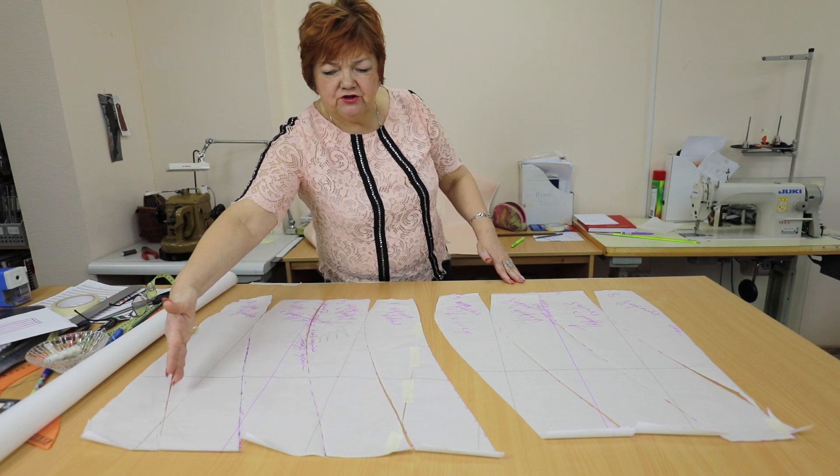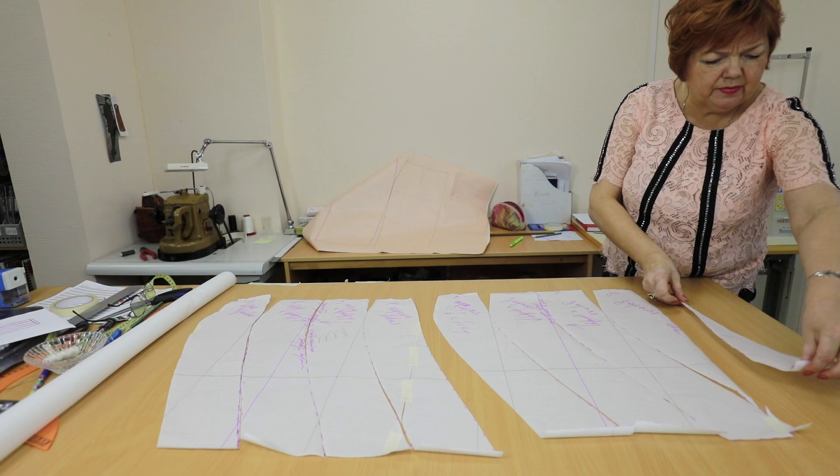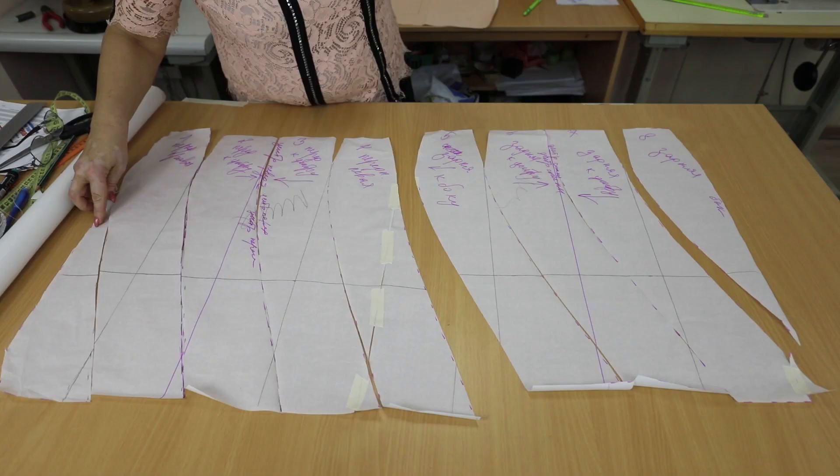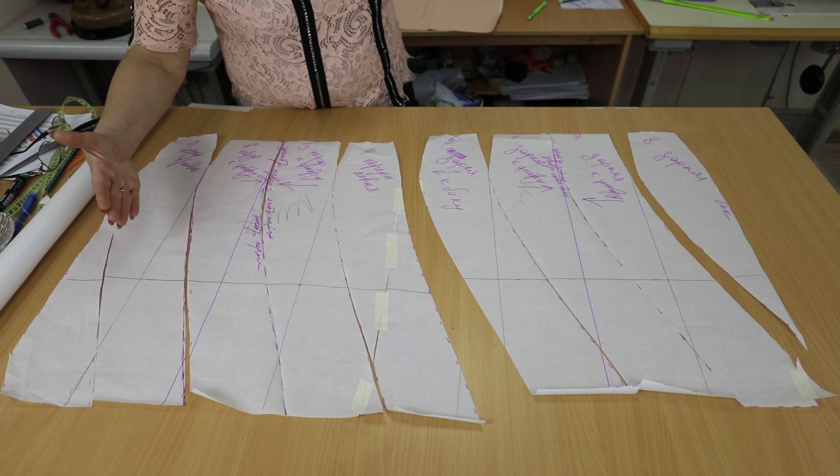We need to attach this small piece to the last gore at the back. Here we go. I want to show you once again. This part is the small extra piece from the first gore.